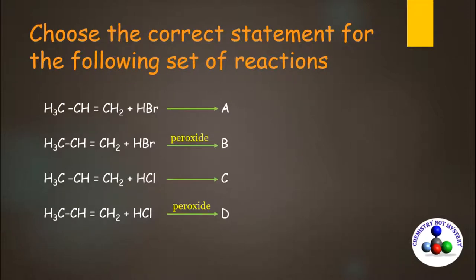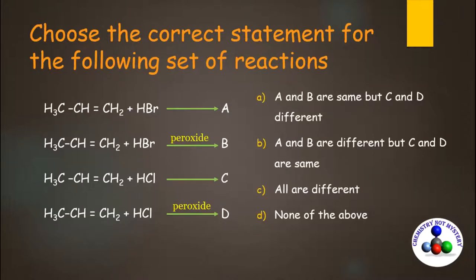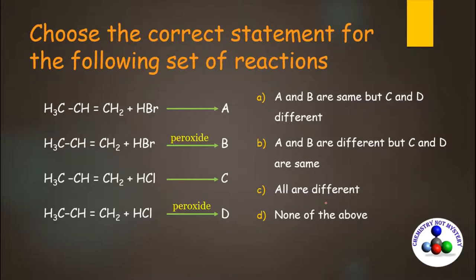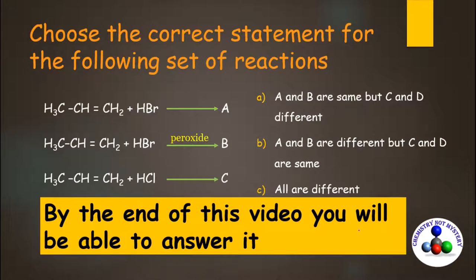Try to answer this question: Choose the correct statement for the following set of reactions. The options are: A and B both are the same but C and D are different; A and B both are different but C and D are the same; all are different; or none of the above. If you are not able to answer this question, watch this video till the end and you will be able to answer it.